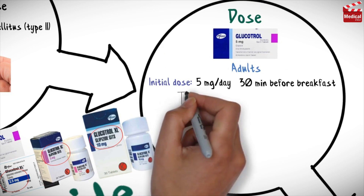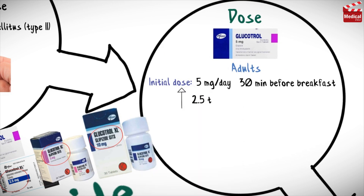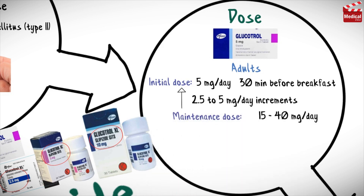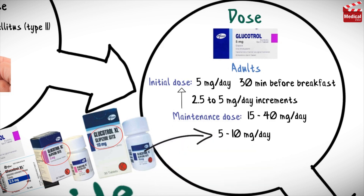The dose should be adjusted in 2.5 to 5 mg per day increments based on blood glucose response. The maintenance dose is 15 to 40 mg per day. The usual dose of the extended release tablets is 5 to 10 mg per day, given once daily.